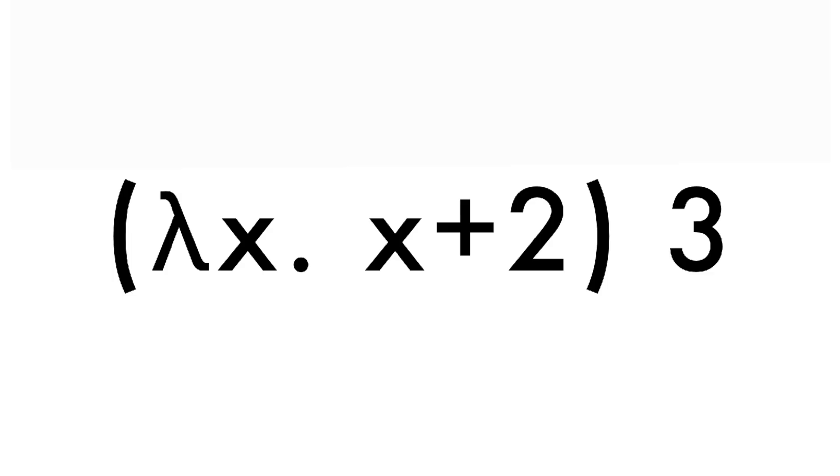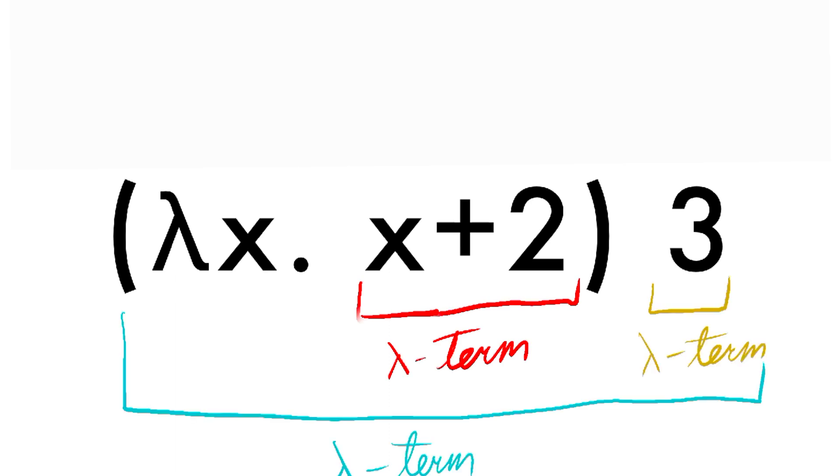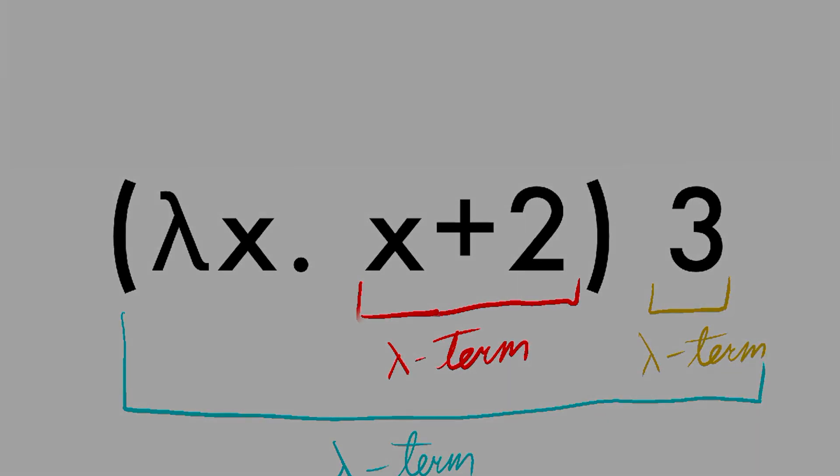But before we get into any complicated things, here is the formal explanation. A program is a lambda term, which is anything valid that you can write in lambda calculus. And we have three different kinds of lambda terms. The simplest is a variable written using a letter. The second kind of lambda term is one we've already seen, a function. This lambda term is created by attaching a variable on the left, and some calculation or expression on the right. So how do we define what a calculation or expression is? It is just anything that's a lambda term. This means that for now, functions can either return a variable or another function.